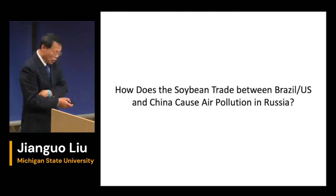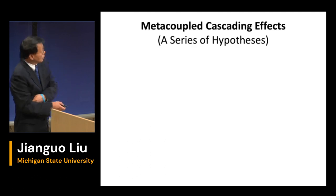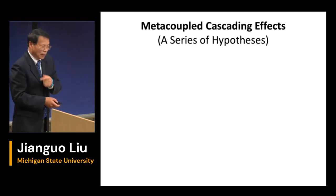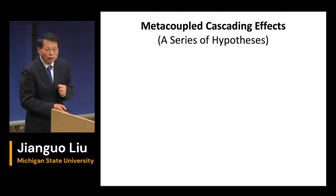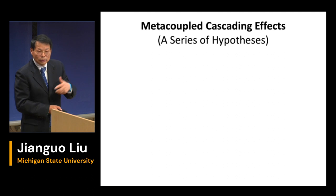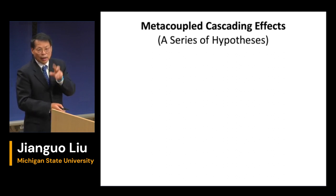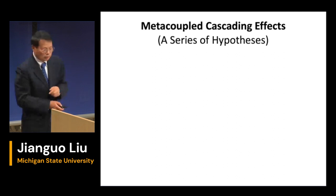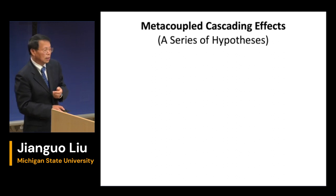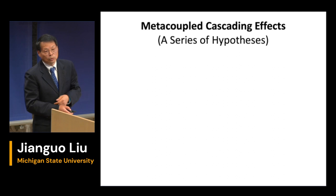This is our hypothesis — what we call the metacoupled cascading effect. We have a series of hypotheses, just like Nick dealt with drought impacts on biodiversity in Brazil. Our hypotheses address how trade between Brazil, the U.S., and China would have an impact on air pollution in Russia.